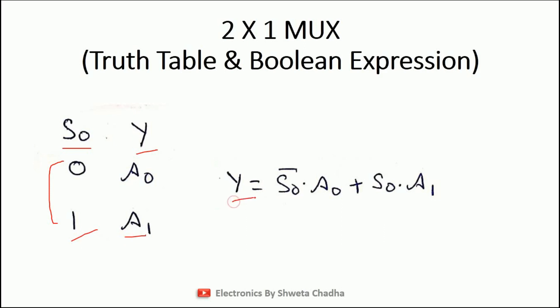Since there is only a single output in the block diagram, only a single Boolean expression will be written. Using the SOP method (sum of products), the Boolean expression is: Y = S0 bar dot A0 plus S0 dot A1. This is the Boolean expression for the 2 cross 1 multiplexer.